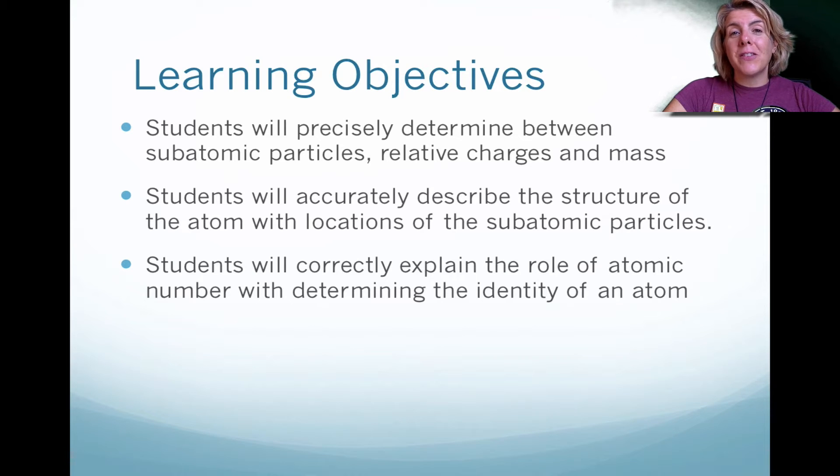Hi, this is Mrs. Robel. This is Chapter 4, Structure of the Atom, Part 2. In this video, we're going to look at how the subatomic particles were determined and what were their relative charges and mass. Then we're going to look at the structure of the atom and where these subatomic particles are located. And then we're going to correctly explain the role of the atomic number and how it relates to the identity of the atom.